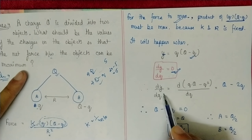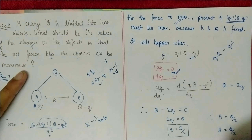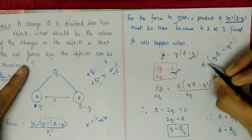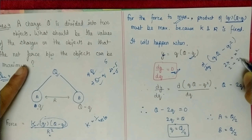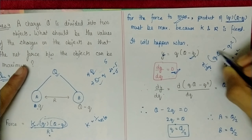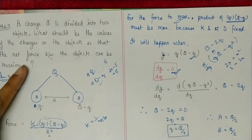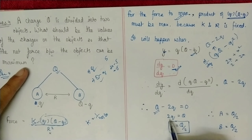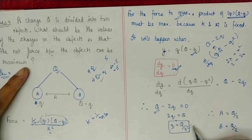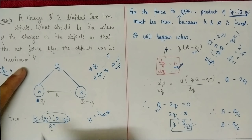Differentiating y = qQ − q² with respect to q gives Q − 2q = 0. Setting this to zero: 2q = Q, so q = Q/2. This means the force is maximum when the first charge is Q/2, and the second charge is Q − Q/2 = Q/2 as well.